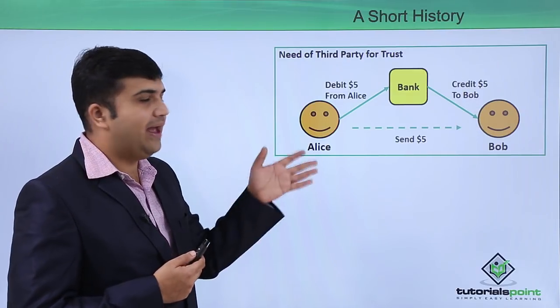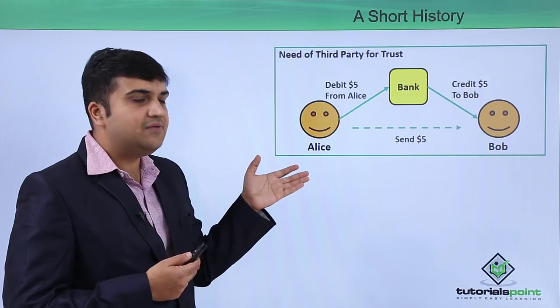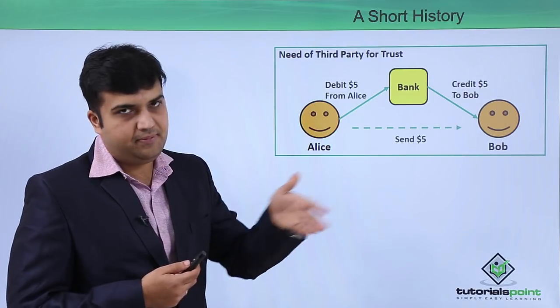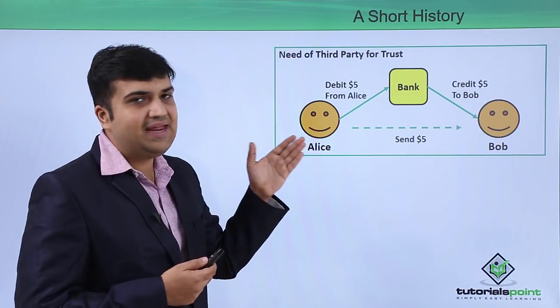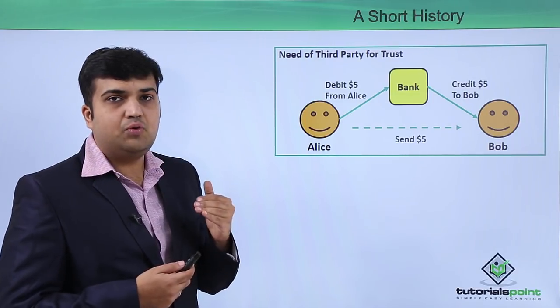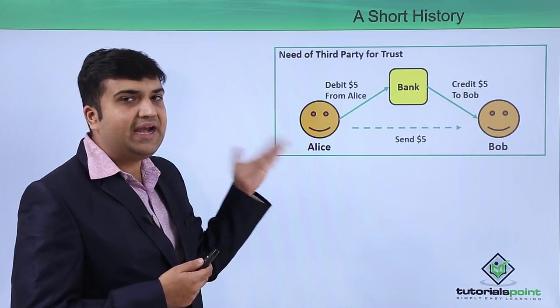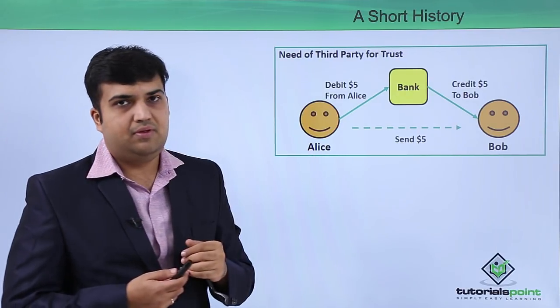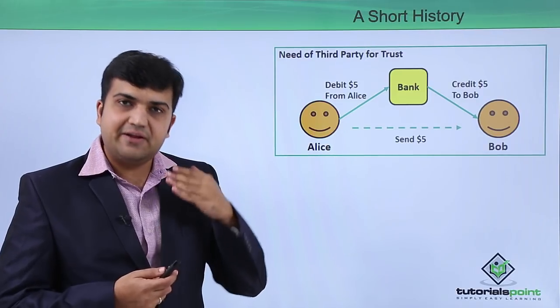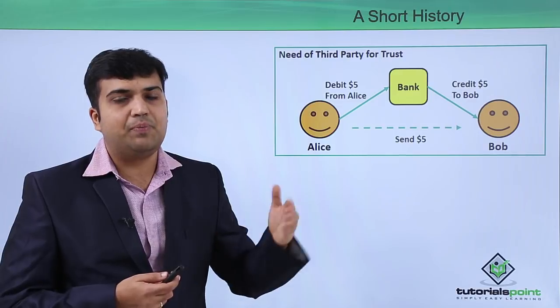Let's say, for example, a bank. In this case, Alice once again wants to transfer $5 to Bob. The bank, acting as a third-party mediator, will have to create two entries: one debit entry for Alice and one credit entry for Bob. In this case, we require a trusted third party to facilitate a transaction between two parties.